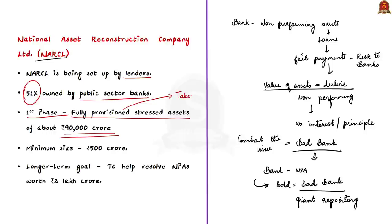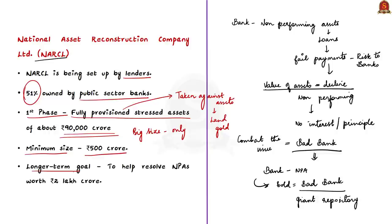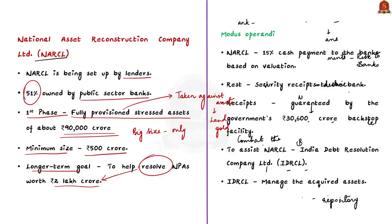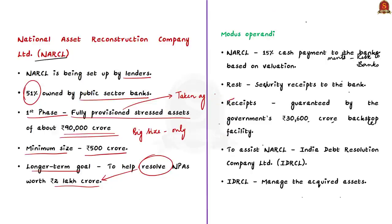NARCL proposes to take over fully provisioned stressed assets of about 90,000 crore in the first phase — loans taken against assets like houses, land, gold, etc. The bad bank targets big-sized loans only; the minimum size of each NPA to be acquired will be 500 crore. The longer-term goal is to help resolve NPAs worth 2 lakh crore. Initially, NARCL would make a 15% cash payment to banks based on valuation, with the rest given as security receipts guaranteed by the government's 30,600 crore backstop facility.